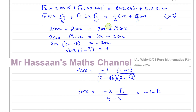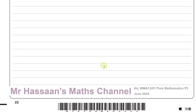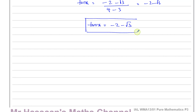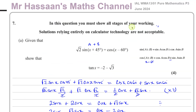Tan x equals minus 2 minus root 3, which is exactly what we had to show. So that's the answer to part A, and that's completed.